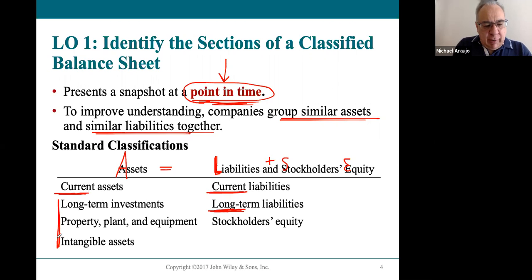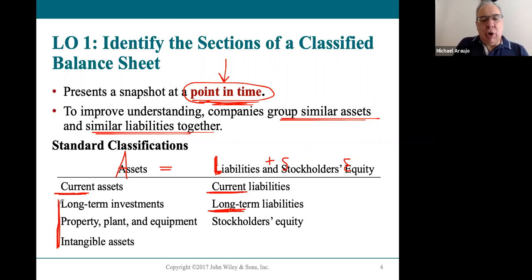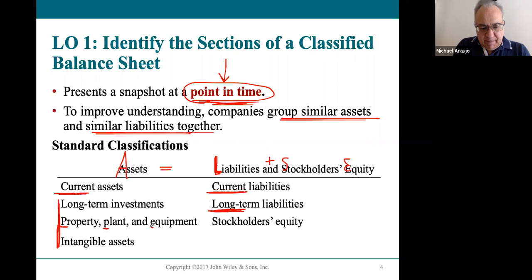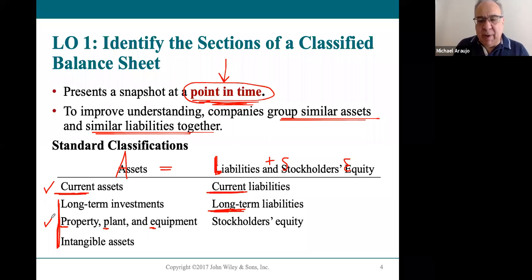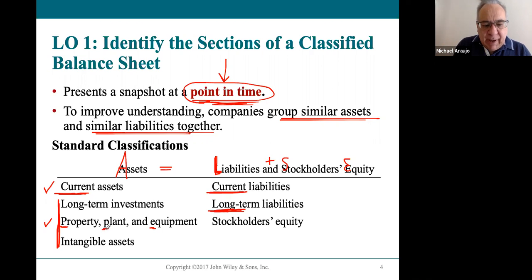Let's look at long-term assets. The most common long-term assets companies have fall into the category of property, plant, and equipment. Every company you'll ever see will definitely have current assets and will definitely have property, plant, and equipment. These are physical assets like land, a building, computer equipment — things a company is going to use for a long period of time, over a year. They would be classified in the property, plant, and equipment category.